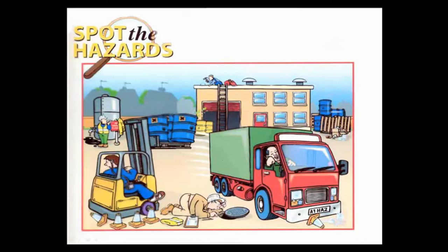Look at this lorry — we've got what looks like glass in front of it and a cone, all potential hazards which could cause the lorry driver to have an accident. He also seems to be using a mobile phone, so he's not paying attention to where he's going. And there is a mirror missing off the side of the lorry.